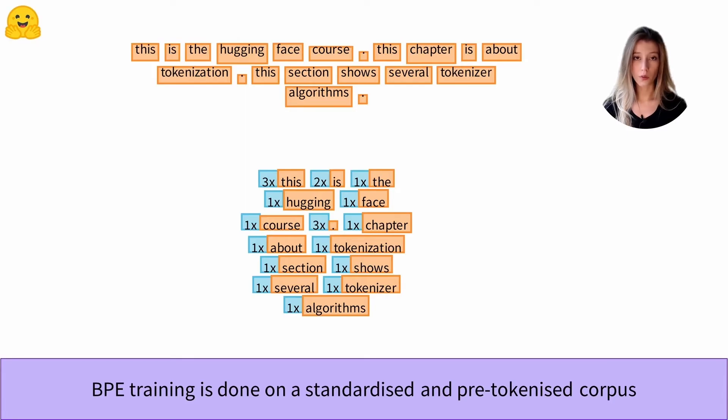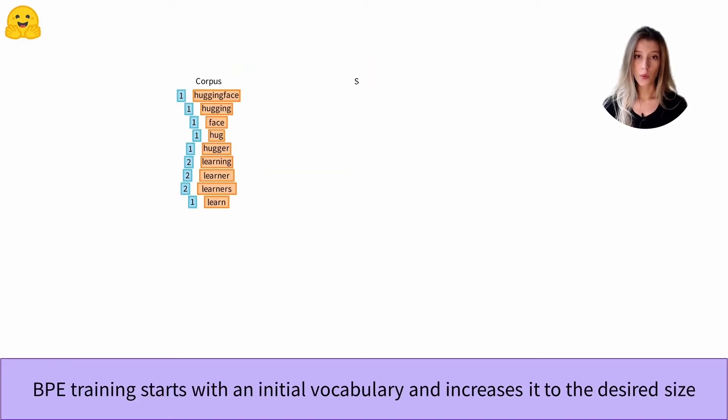To understand how the training works, we consider this corpus composed of the following words: hugging, face, hug, a, girl, etc. BPE is an algorithm that starts with an initial vocabulary and then increases it to the desired size.